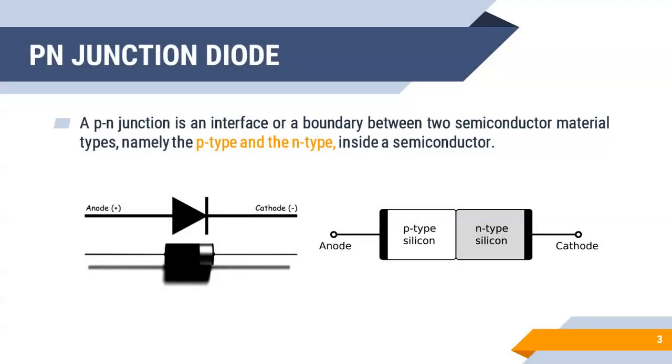We all know that PN junction diode is the combination of P-type and N-type semiconductor. In P-type semiconductor, the majority carriers are holes. Similarly, in N-type semiconductor, the majority carriers are electrons. When these two semiconductor materials are combined together, it will create the PN junction diode.